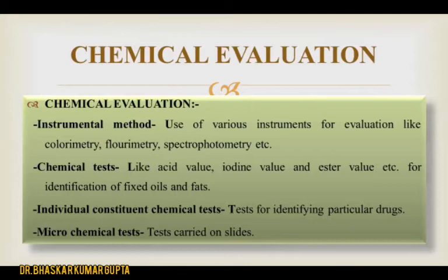The next parameter is chemical evaluation. In chemical evaluation, we use various instruments such as colorimetry, fluorimetry, spectroscopy, etc., and also perform chemical tests on drug extracts. Chemical tests like acid value, iodine value, and ester value are used for identification of fixed oils and fats. Individual constituent chemical tests can be performed for identifying a particular drug, and microchemical tests can also be performed.